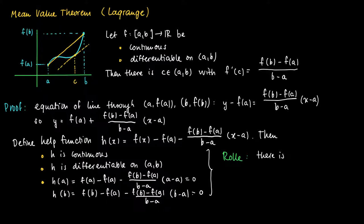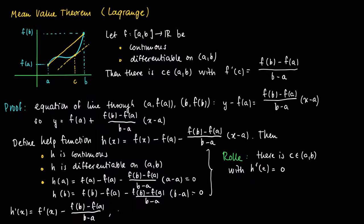Now we apply Rolle's theorem to the function h. Since h(a) = h(b) = 0, there should be a c between a and b such that h'(c) = 0. The derivative of h is simply the derivative of f minus the derivative of the linear piece, which is f(b) minus f(a) divided by b minus a. Substituting c gives h'(c) = 0, or equivalently f'(c) = f(b) minus f(a) divided by b minus a, which is exactly what we needed to show.